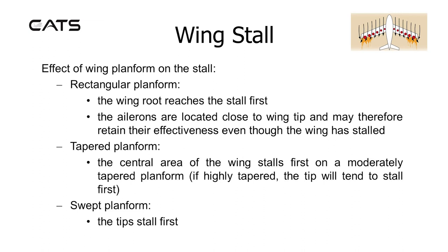Wing stall — the effect of wing planform on the stall. For a rectangular planform the wing root reaches the stall first. The ailerons are located close to the wing tip and may therefore retain their effectiveness even though the wing has stalled. Tapered planform: the central area of the wing stalls first on a moderately tapered planform. If highly tapered, the tip will tend to stall first.